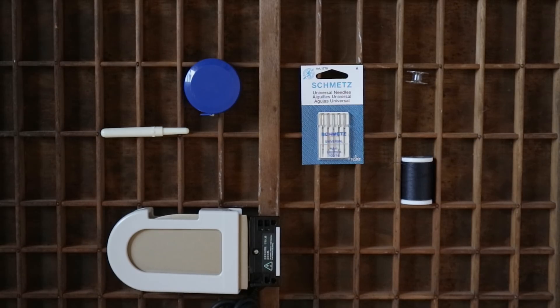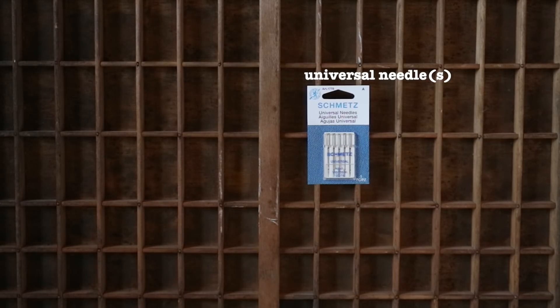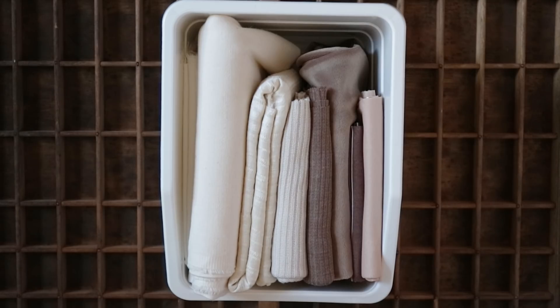And if you already own a sewing machine at this point, your supplies are really not going to change. The only thing you'll need in addition are universal sewing needles for your machine and a bobbin. And while you technically need one, I actually recommend that you buy several.